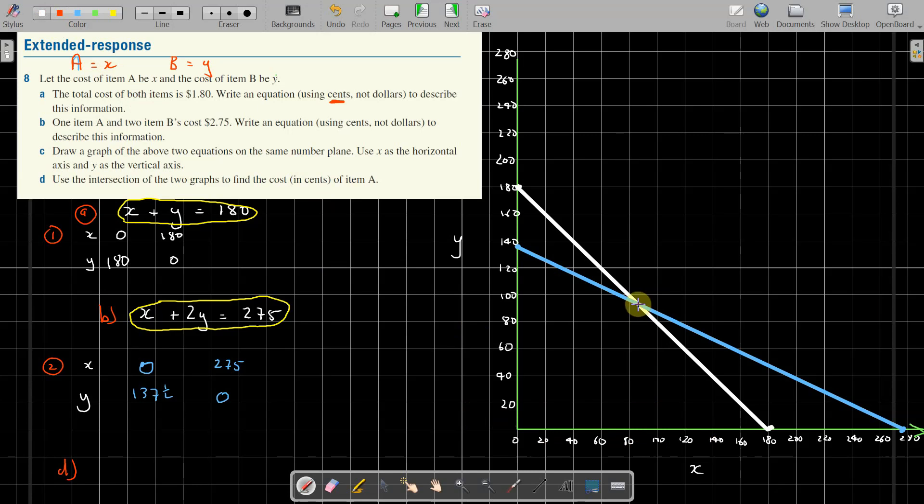So where they cross there looks like it's about, not quite 80... when it is over 80, not quite 90. Let me just do a little downward... from there down to there. That's not quite, about 85.